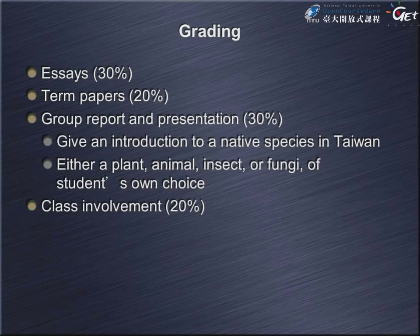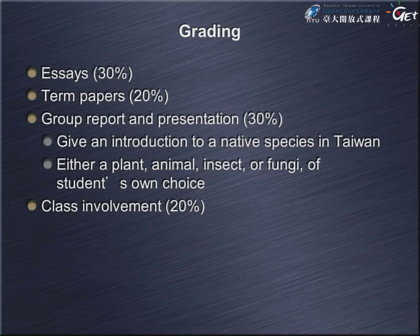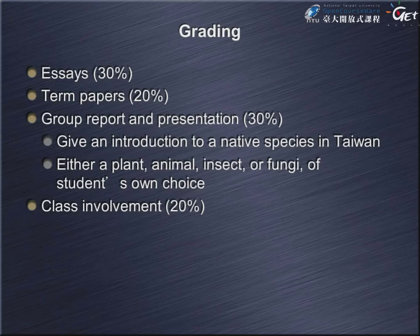Be sure to turn in the name as soon as possible — don't wait until the deadline. The group report deadline is June 5, and it will count for half of the group report points. The other half will be based on the final presentation. Each group will present the results of the interview, with about 10 to 15 minutes to talk about the researcher and what he or she has been doing on biodiversity issues.